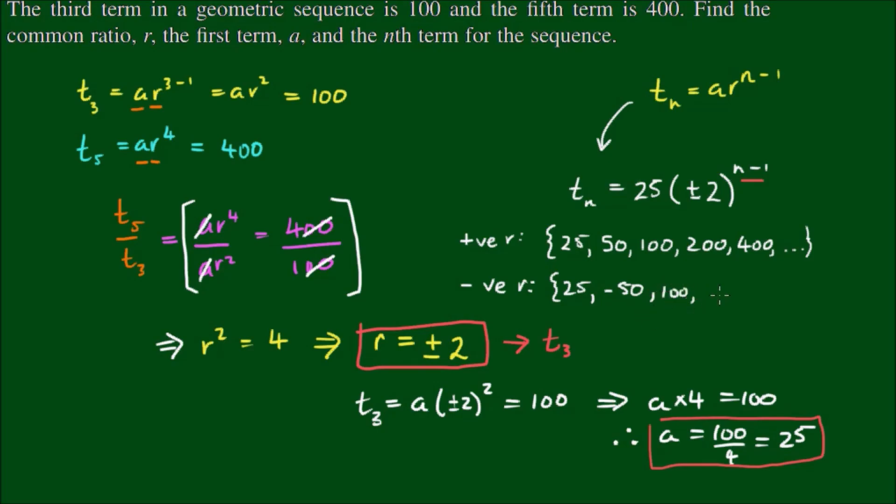So the even terms will have an odd power which means they will be negative. Third term will be 100, negative 200, 400, and so forth. So for negative values of r we'll get an alternating sequence of positive and negative terms.